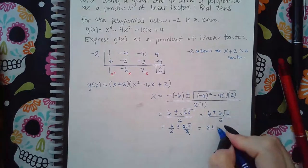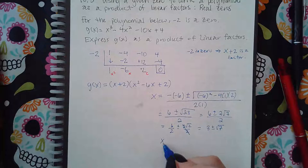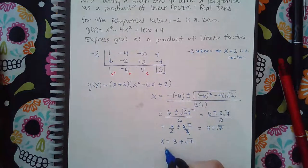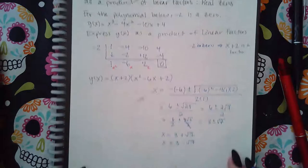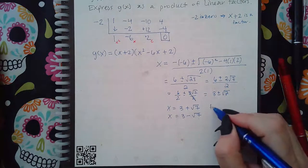So then I have two x values here. I have 3 plus square root of 7, and I have 3 minus square root of 7. But if these are the x values, what are the factors?